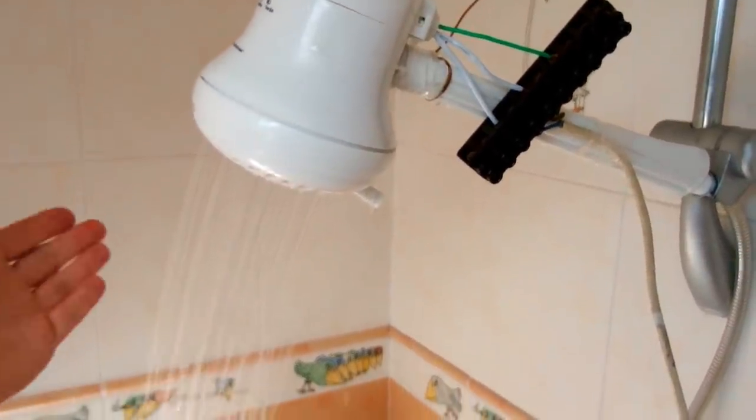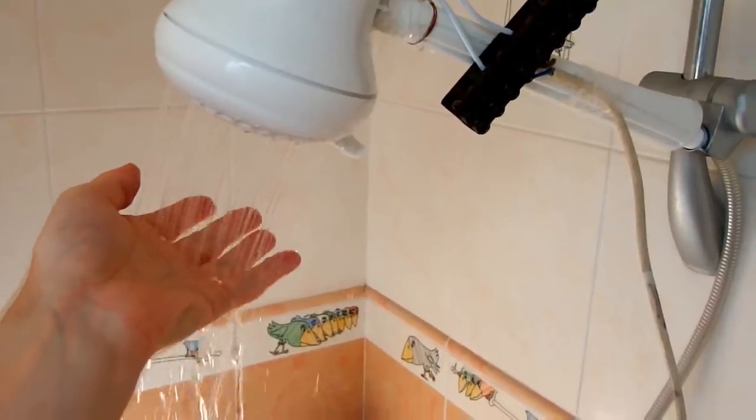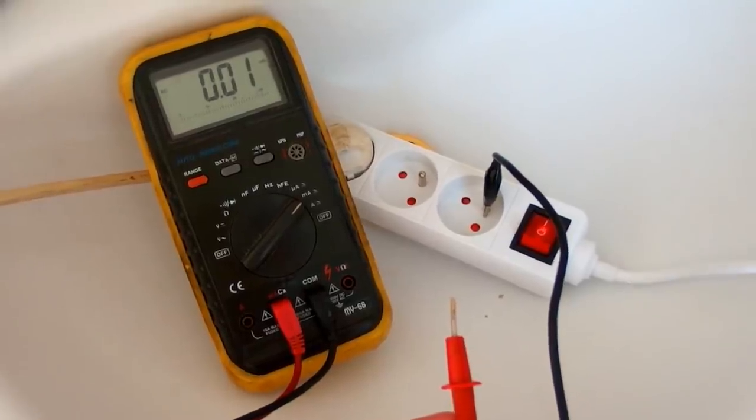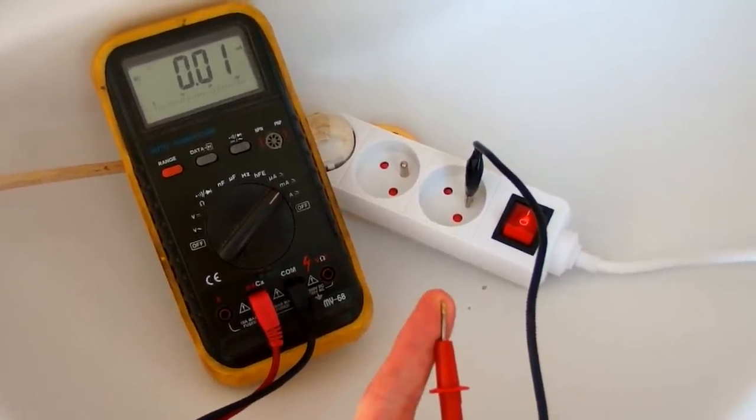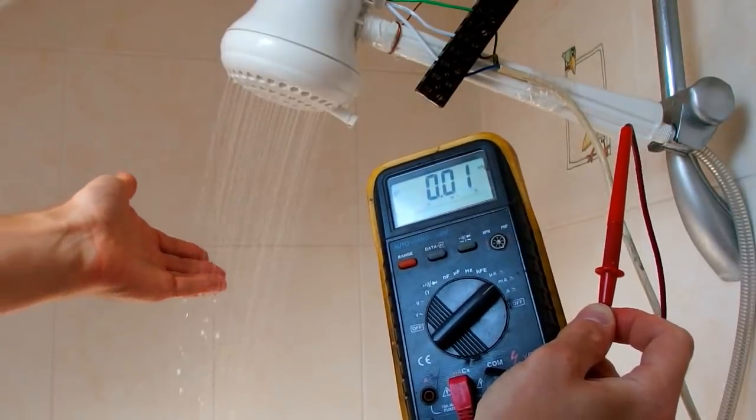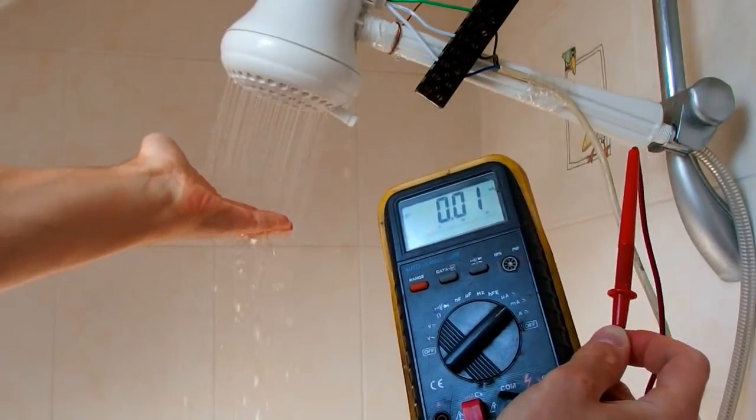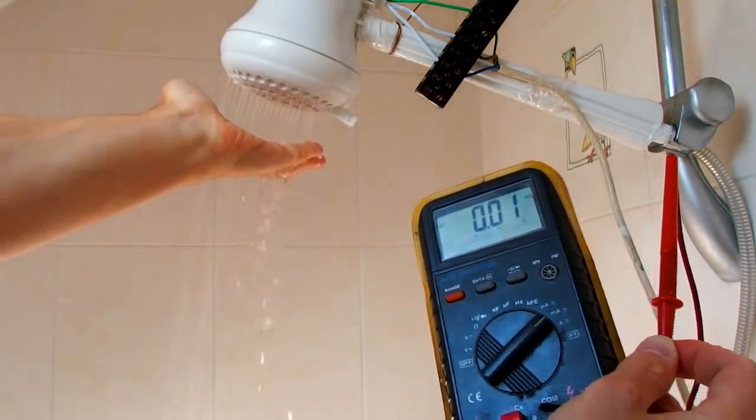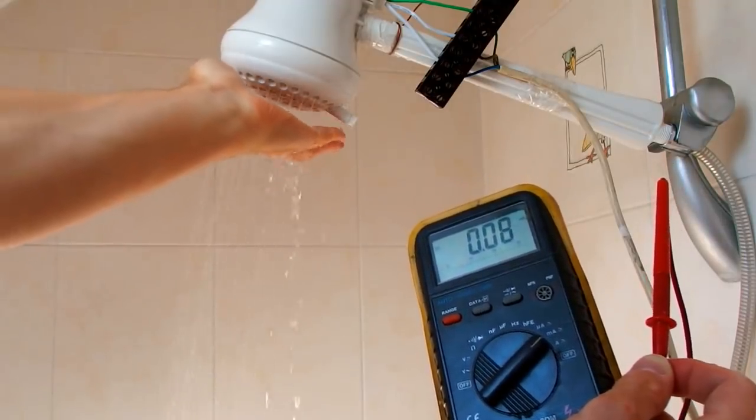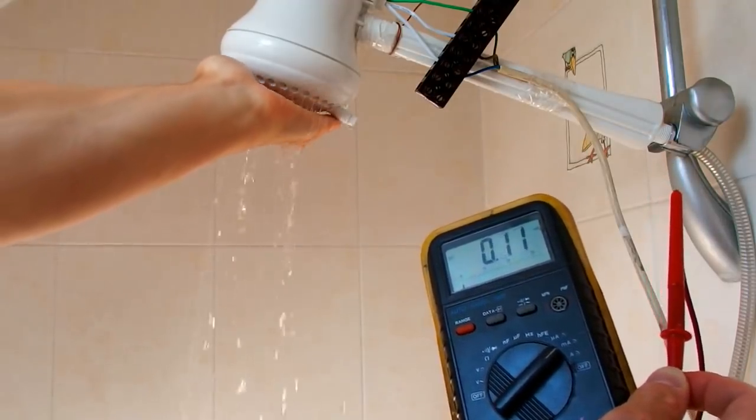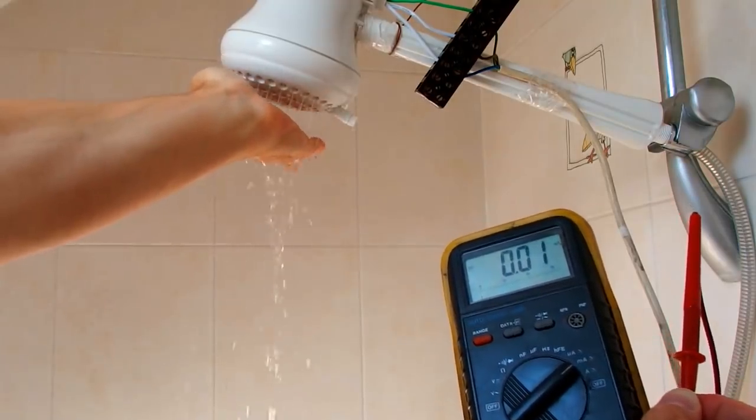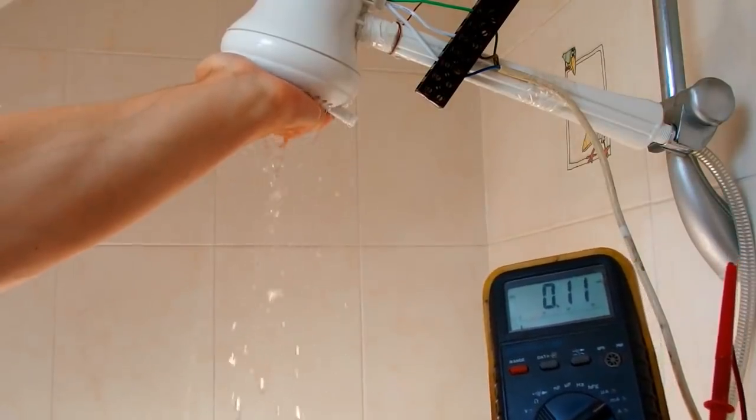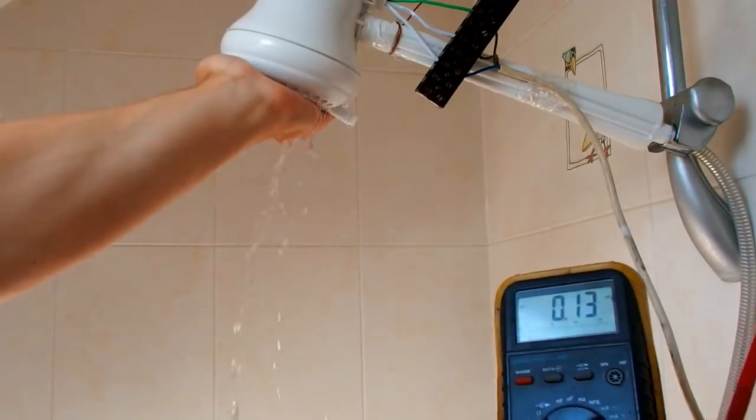What if I put my hand under it? It's nicely warm and nothing happens because I'm not grounded. So now let's actually ground myself and measure the current. Still no shock. Still nothing. There is some leakage but I can't feel anything. The water is warm. There is some current but not noticeable.